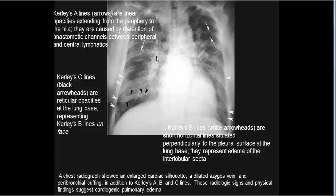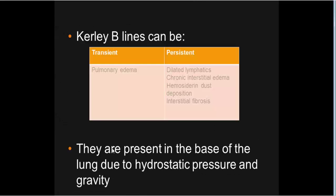Kerley A lines radiate from the hilum toward the periphery, representing deep septal lines in the central portion of the lung that do not reach the pleura. Their presence normally indicates a more acute or severe degree of edema. Kerley B lines appear peripherally, perpendicular to the pleural surface. Kerley C lines appear as a spider-web or interlacing superimposition of B lines. Kerley B lines may be transient or permanent, seen in pulmonary edema, dilated lymphatics, interstitial edema, and interstitial fibrosis if persistent.